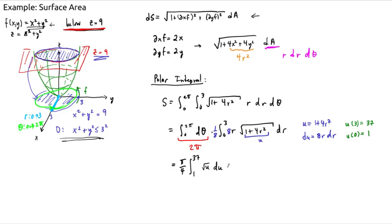And so this is no problem. This is pi over 4 times U to the 3 halves power times 2 thirds, where U goes from 1 to 37. All right, we get a little cancellation here. And we end up with our surface area being pi over 6 times the difference, 37 to the 3 halves power is 37 times square root 37 minus 1.